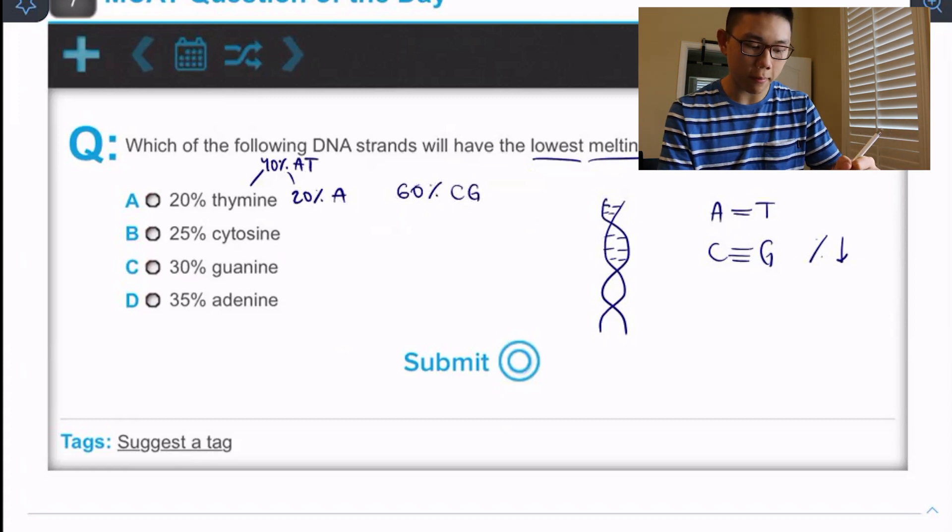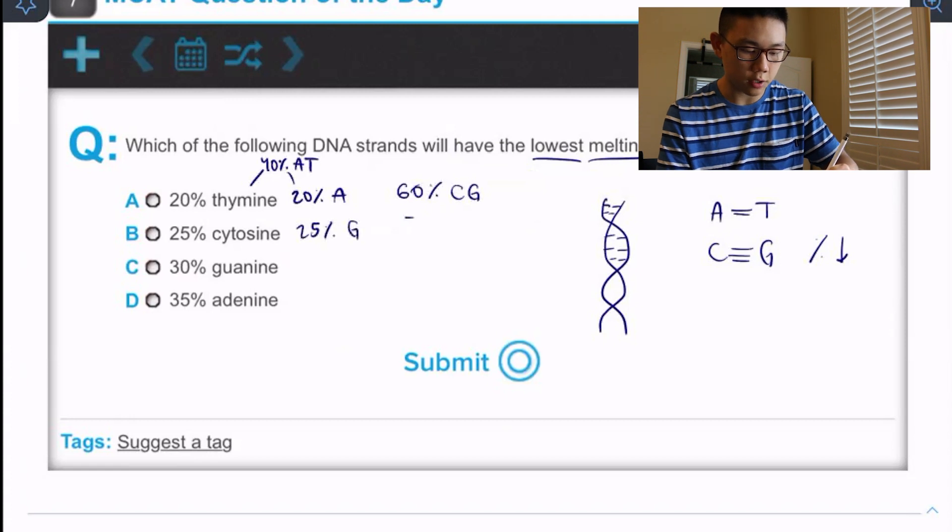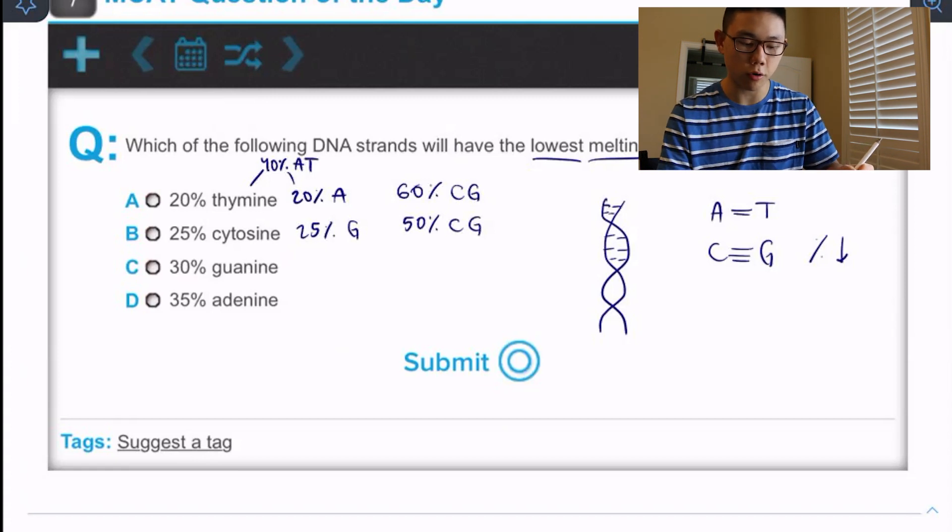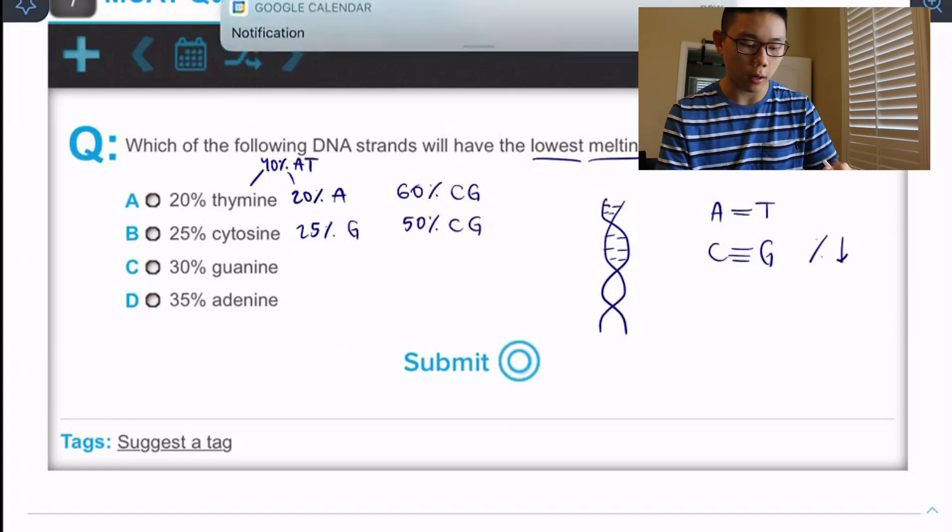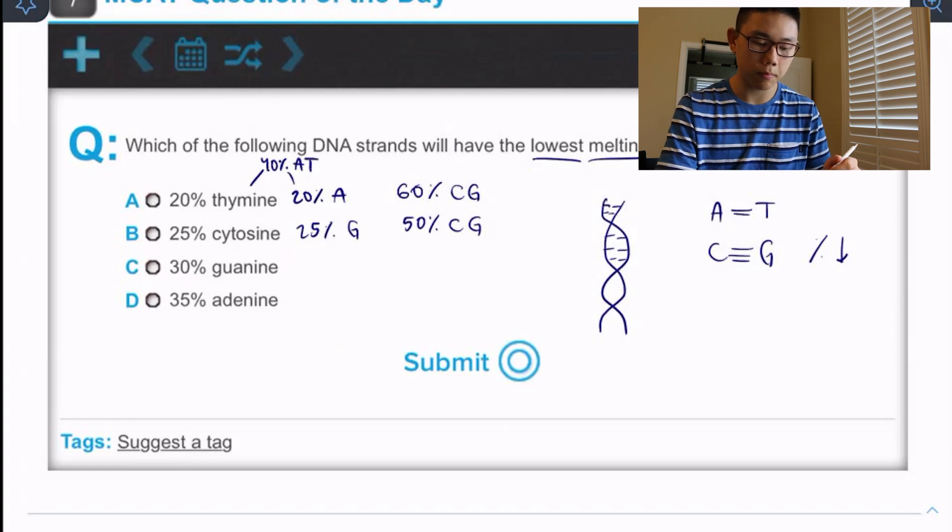Okay. Answer choice B. 25% cytosine tells us that we also have 25% guanine, which tells us we have a cumulative of 50% C G base pairing. So from A and B, we already know that B is a better choice because it has a lower proportion of C G base pairing.